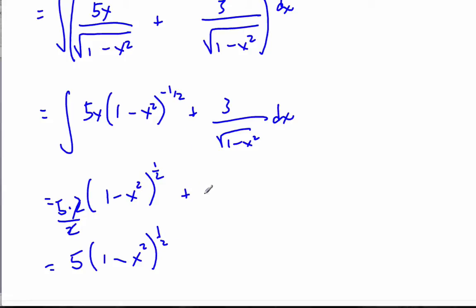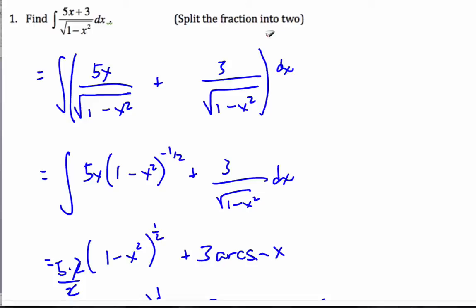When I do this one, that's simply going to be 3 arc sine x over a, which is 1. So, plus 3 arc sine x plus c. So, this technique is all about splitting the fraction in two. And you have to recognize that the square root of the bottom leads to a potential arc sine scenario if there's no x on top, or potentially u substitution if there is an x on top.